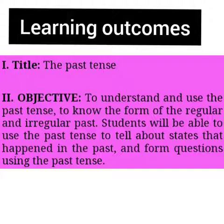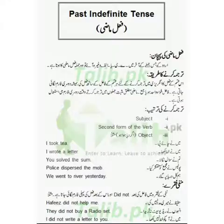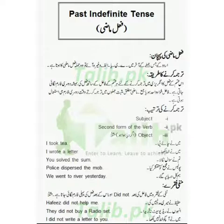Students will be able to use the past tense to tell about states that happened in the past, and you can make questions in the past tense. Now let's come to the rule. Past indefinite tense کی پہلے ہم اردو میں پہچاند دیکھ لیتے ہیں. جن جملوں کے آخر میں الف، چھوٹی یہ یا بڑی یہ آتا ہے وہ ہمارے ماضی کے جملے ہوتے ہیں اور انہیں ہم past indefinite tense کہتے ہیں.